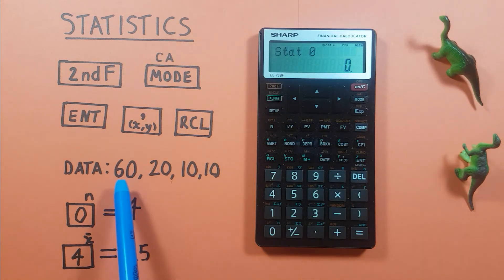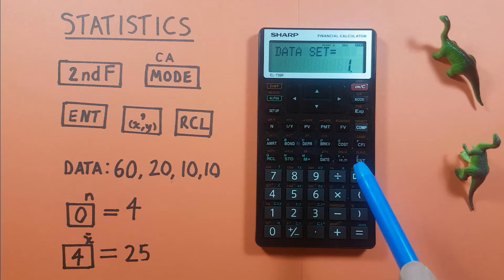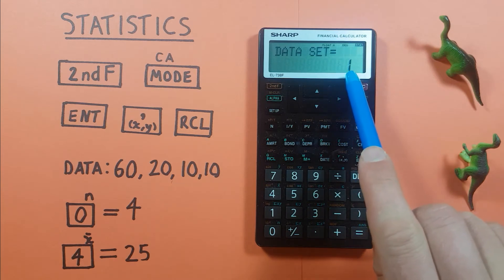Now this is our data set here: 60, 20, 10, 10. We can start entering it in with the 60. So we just type in the 60 and then hit the enter key. There we go. We see a 1 there. That lets us know we have one item in our data set now.